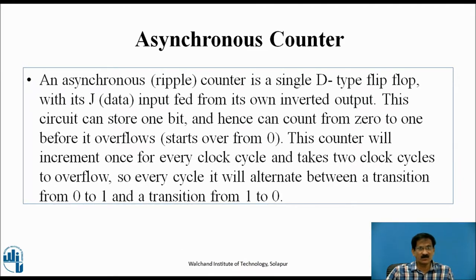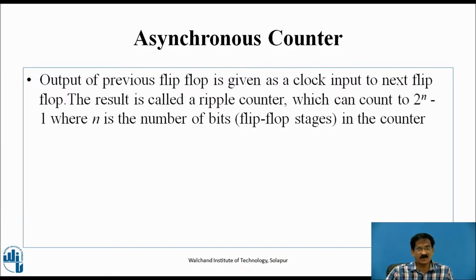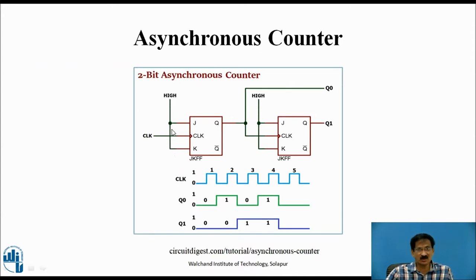An asynchronous counter uses a D-type flip-flop. This circuit can store 1-bit and hence can count from 0 to 1 before it overflows. This counter will increment once for every clock cycle and takes 2 clock cycles to overflow, alternating between transitions from 0 to 1 and 1 to 0. The output of a previous flip-flop is given as the clock input to the next flip-flop, and the result is called a ripple counter. In a 2-bit asynchronous counter, J and K inputs are permanently connected to logic 1. Whenever the clock is present, Q becomes 1. The output of one flip-flop is given as the clock input to the next, so the second flip-flop changes its output only when the previous one falls from 1 to 0.